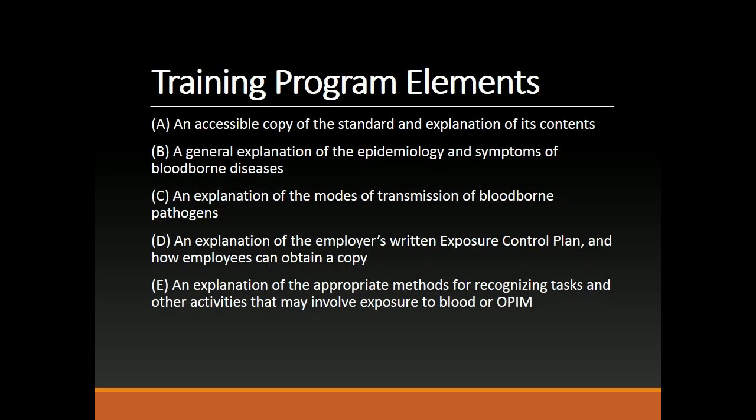Training Program Elements. A: An accessible copy of the standard and explanation of its contents. B: A general explanation of the epidemiology and symptoms of bloodborne diseases. C: An explanation of the modes of transmission of bloodborne pathogens. D: An explanation of the employer's written exposure control plan and how employees can obtain a copy. E: An explanation of the appropriate methods for recognizing tasks and other activities that may involve exposure to blood or a PIM.